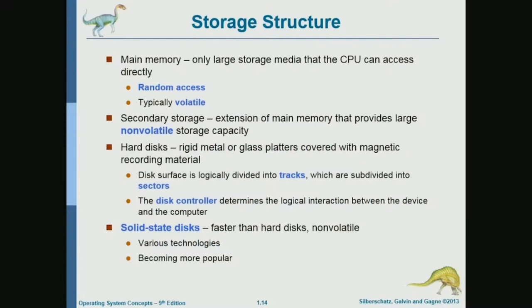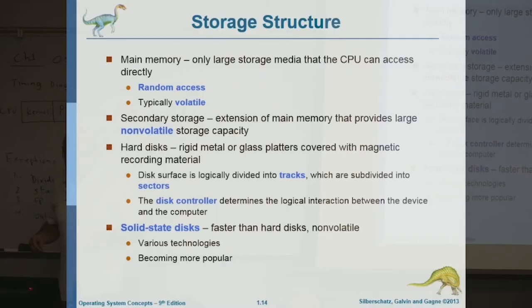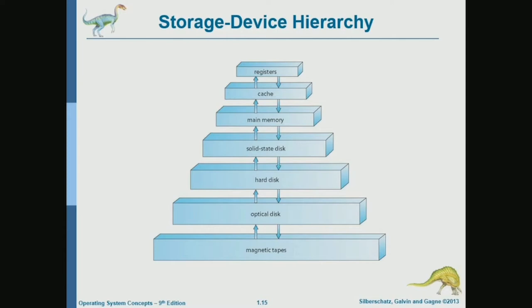I will go quickly through some review material on the different components of a computer system. Storage structure — we are all familiar with the different kinds of storage devices. The fastest are the registers, then the cache, main memory, solid state disk, hard disk, optical disk, and magnetic tapes.